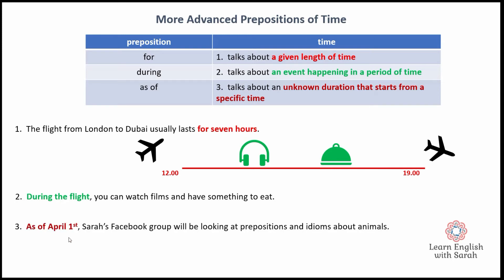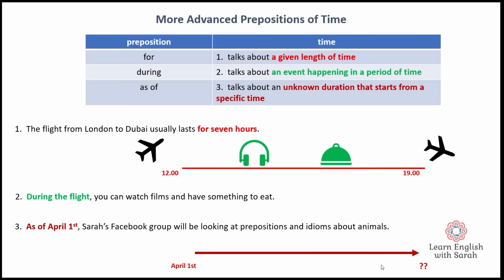And then this last one: 'as of April the first' — this is our specific starting time. As of April the first, Sarah's Facebook group will be looking at prepositions and idioms about animals. You guys may love learning about prepositions and animals so much that we'll just continue — perhaps for a month, perhaps for two, perhaps all year. We don't know. So this is the start of an unknown duration. We begin on April the first and we just don't know when we're going to stop.